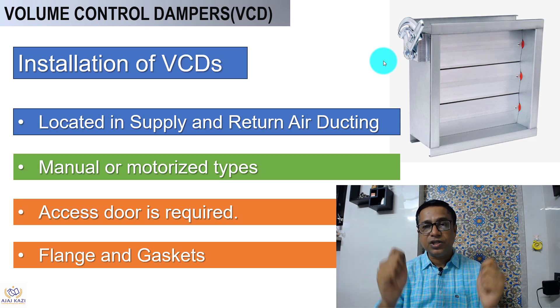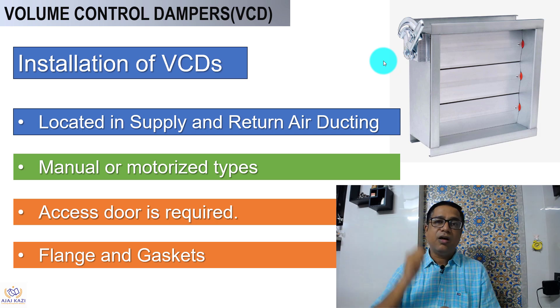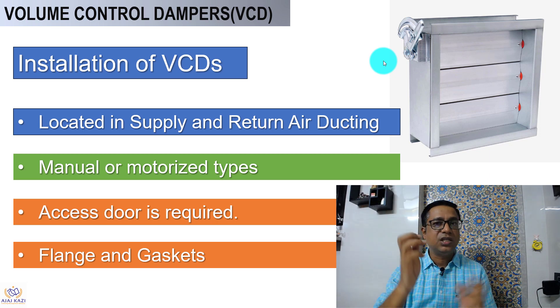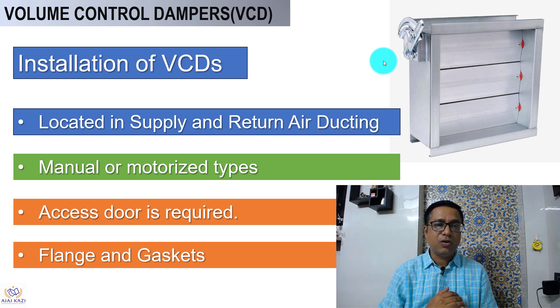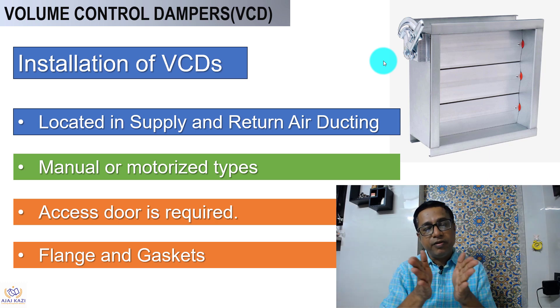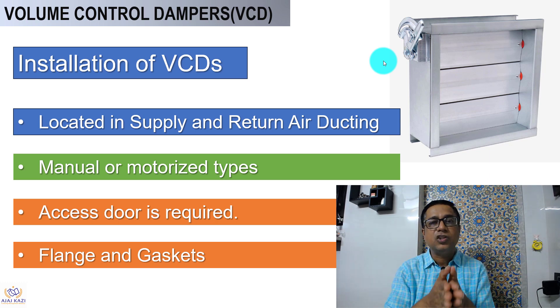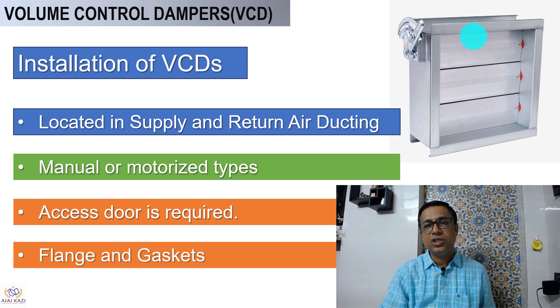For any VCD, because we will need access to open, close, or do air balancing or re-air balancing later on, you need an access panel in the false ceiling — which is very important. Without access, these VCDs will not play any significant role. When connecting VCDs to the duct, there must be flanges and a gasket.